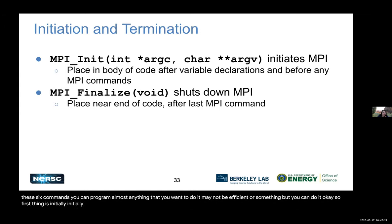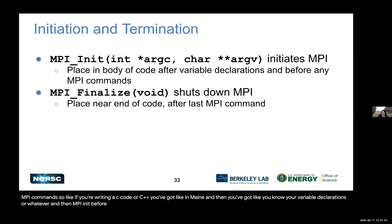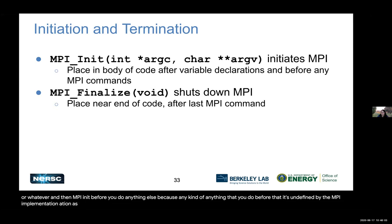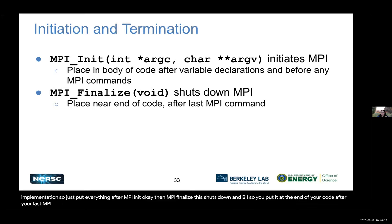The first is initiation and termination. MPI_Init goes in the body of your code after variable declarations and before any MPI commands. In C or C++, after int main and your variable declarations, you put MPI_Init before doing anything else, because anything done before that is undefined by the MPI implementation. MPI_Finalize shuts down MPI — put it at the end of your code after your last MPI command. What I tend to do is MPI_Finalize, then return zero, and you're done.